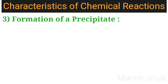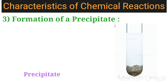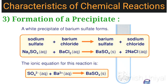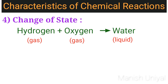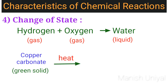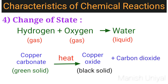The third characteristic is formation of precipitate. In some chemical reactions, when two solutions are mixed, an insoluble solid known as a precipitate is formed. For example, when barium chloride solution is added to sodium sulfate solution, a white precipitate of barium sulfate is formed. The fourth characteristic is change of state. Change of state is observed in many chemical reactions — the reactant may be solid or liquid, which changes into a gaseous product or vice versa. For example, when hydrogen gas is burned in oxygen gas, it results in the formation of water, which is a liquid under normal conditions. Another example is copper carbonate, which is a green solid; on heating, it produces copper oxide, a black solid, and carbon dioxide gas.